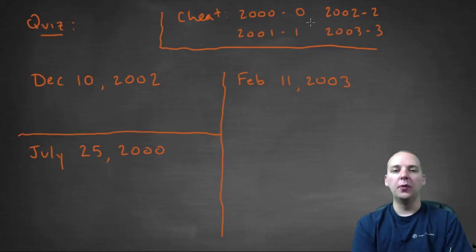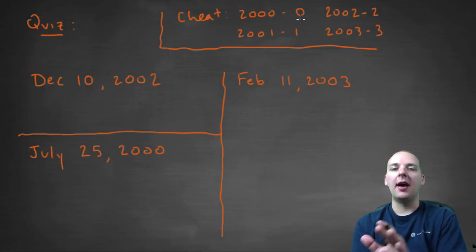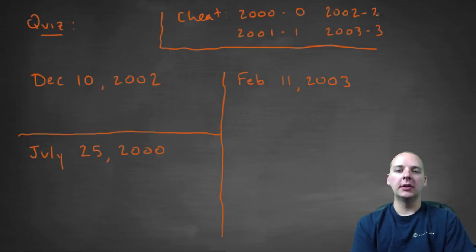So we're going to cheat a little bit for the year codes. Here I just gave you 4 year codes. Don't extrapolate this beyond what I've shown you. 2004's year code is not 4, but 2000 is 0, 2001 is 1, 2002 is 2, 2003 is 3.